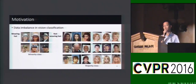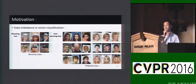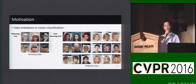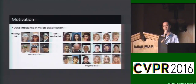Data imbalance is very common in vision classification. For example, in binary classification of the face attribute of people wearing hats or not, there are usually many more images of people not wearing hats than wearing hats. So the positive class of wearing hats is treated as the minority class.